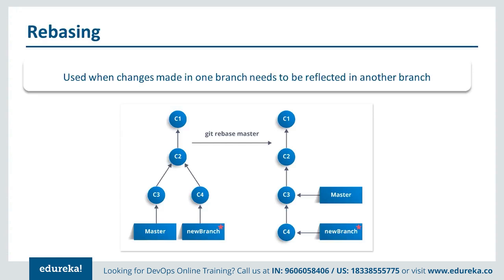Rebasing is also another kind of merging. The standard rebase solves the same problem as merge — both commands are designed to integrate changes from one branch into another, but they do it in different ways. In a workflow with a master branch and a new branch, rebasing places the entire commit history of your branch onto the tip of the master instead of creating a merge commit with two parent commits. Rebasing offers a cleaner project history and is used when changes made in one branch need to be reflected in another branch.